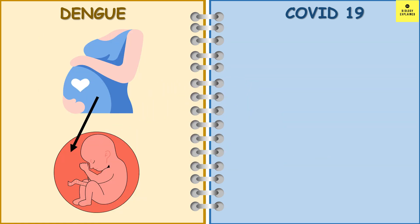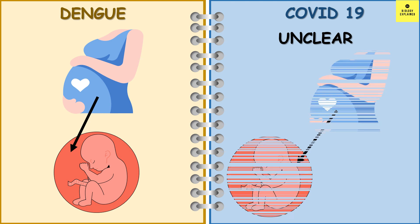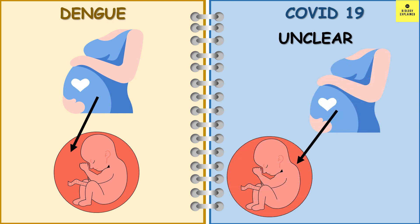Dengue virus can be transmitted from the mother to the fetus. In case of COVID-19, it is unclear whether the virus can be transmitted from mother to fetus, but there is evidence which suggests that transmission from mother to fetus is possible.